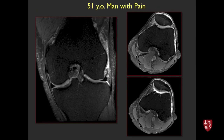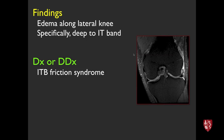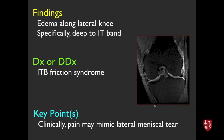51-year-old man with pain. MRI shows edema along the lateral aspect of the knee, along the iliotibial band, with edema deep to it. This is the MR equivalent of iliotibial band friction syndrome. Key point: it may be diagnosed clinically, but symptoms can overlap with those of a lateral meniscal tear. That's often why MRI is done — to rule out a meniscal tear, not necessarily to rule in IT band friction syndrome.